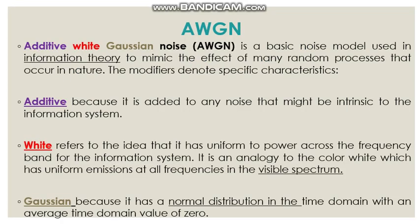As a communication engineer, we all know about AWGN — Additive White Gaussian Noise. It is a basic noise model used in information theory. 'Additive' means it is added to any noise that might be intrinsic to the information system. 'White' refers to white noise. 'Gaussian' refers to a normal distribution, as opposed to Poisson distribution — specifically, a normal distribution in the time domain with an average value of zero. In communication systems, we study AWGN as the standard noise model.